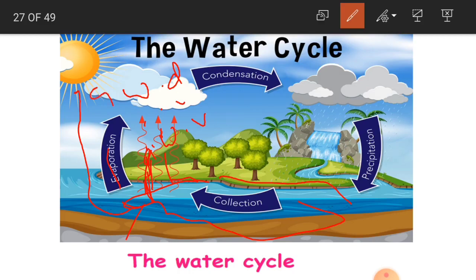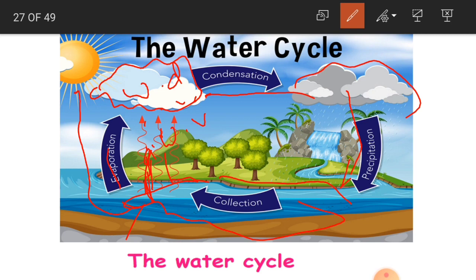All the small droplets join together to form clouds. After getting cooled further, when these water droplets become heavy, they fall down as rain.